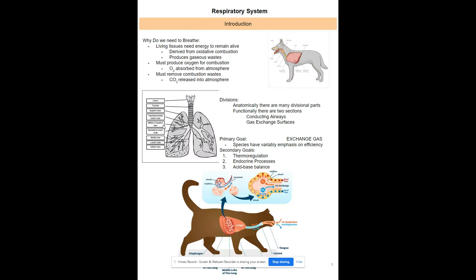I'm going to teach you about the respiratory system and how it works. There are a lot of science processes that explain how your lungs actually work. First, you need to breathe — you need to get enough oxygen from your atmosphere and release the CO2 that you no longer need. The easiest way to divide this up is by anatomical structures and functions: you have conducting airways and gas exchange surfaces.